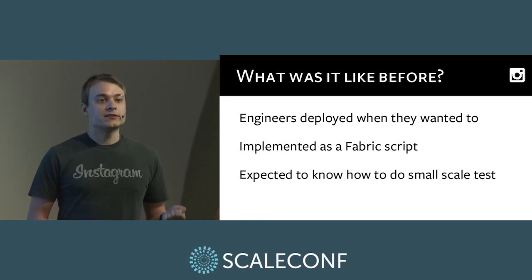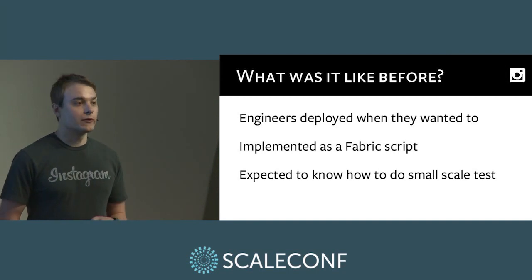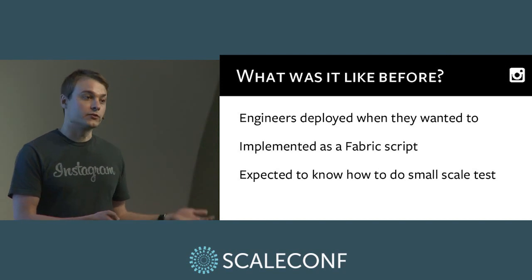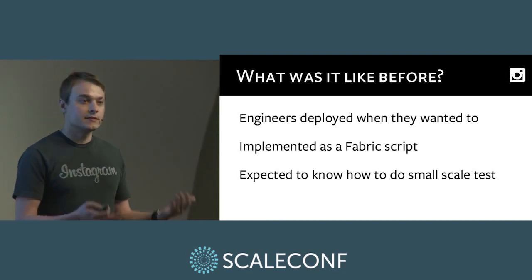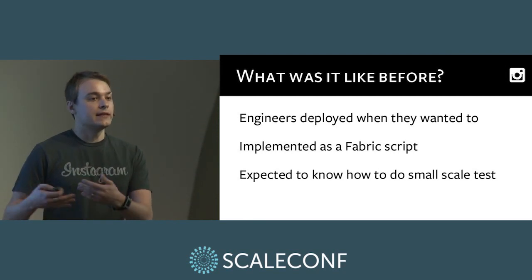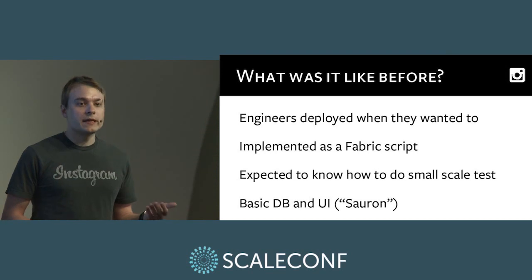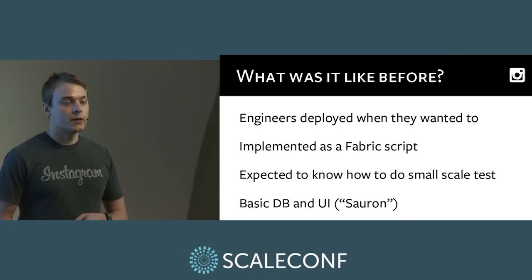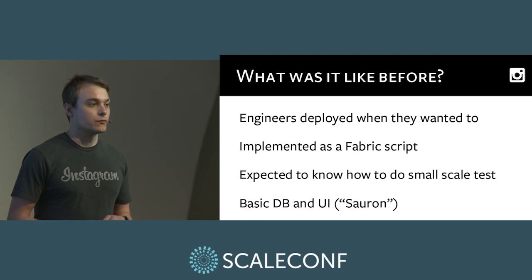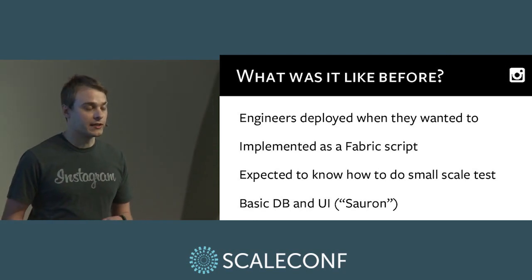Engineers were expected to know how to do a small-scale test. They'd run two rollouts: the first targeting a single machine, then log into the machine, check the logs, confirm everything looked fine, and run a second deployment targeting the entire fleet. We had a basic database and web UI called Soron, which recorded a log of the rollouts — simply who had done it, what time, and the revision being deployed.